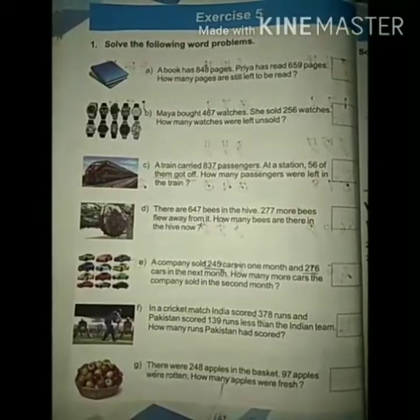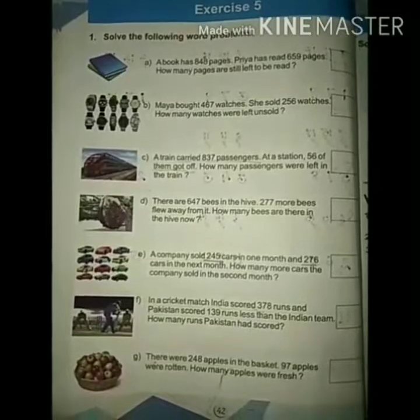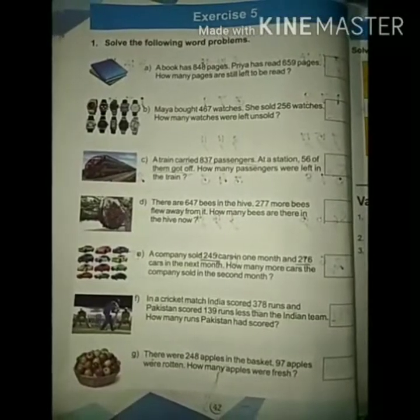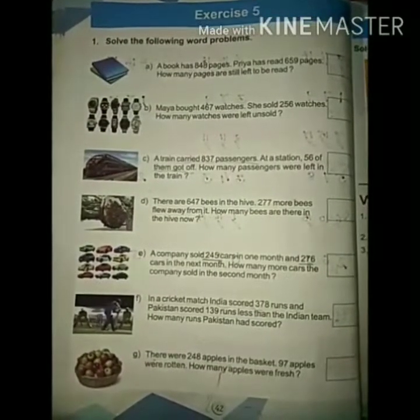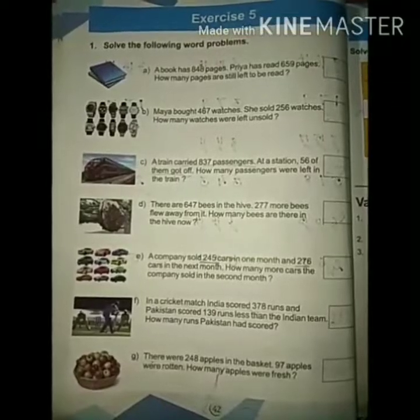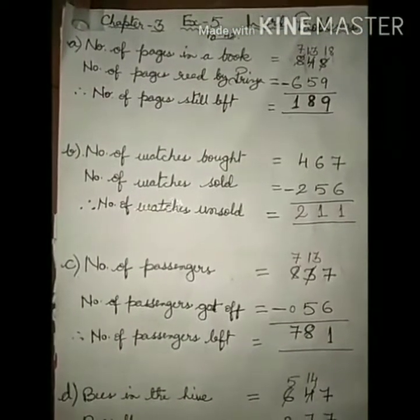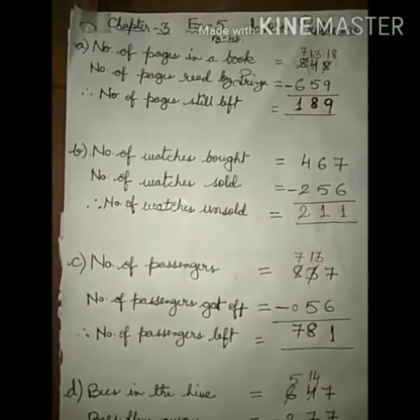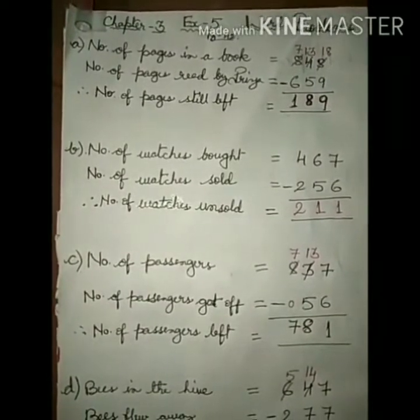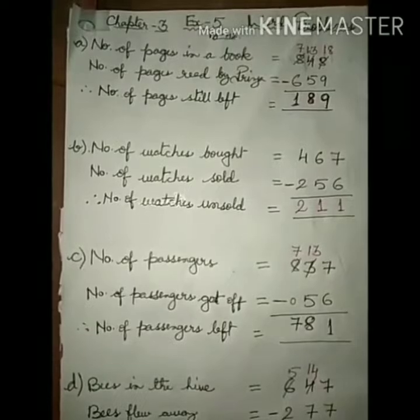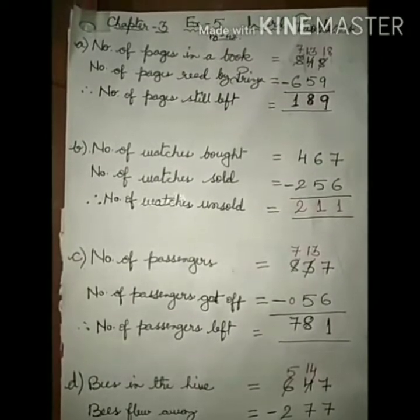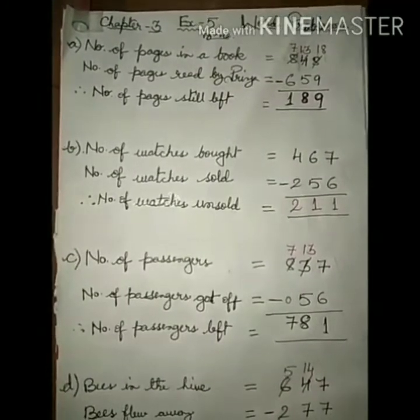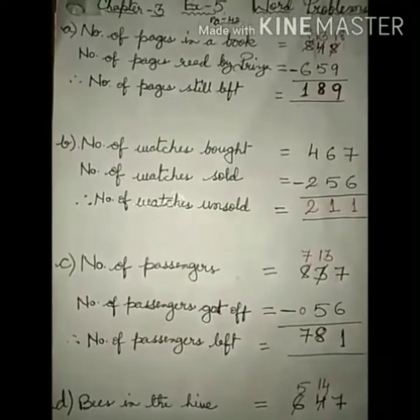Now take out page number 42, Exercise 5. We'll solve some word problems. Be ready. The first question: A book has 848 pages. Priya has read 659 pages. How many pages are still left to be read?